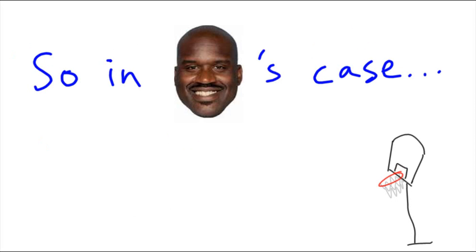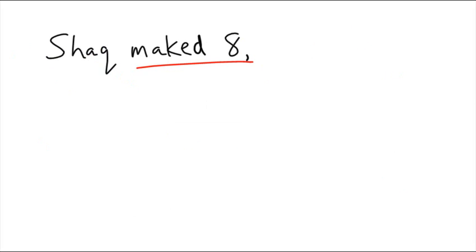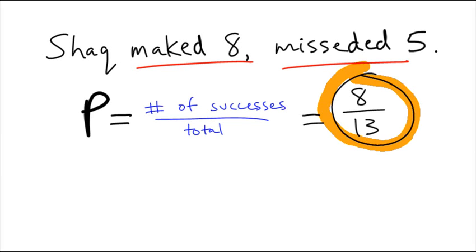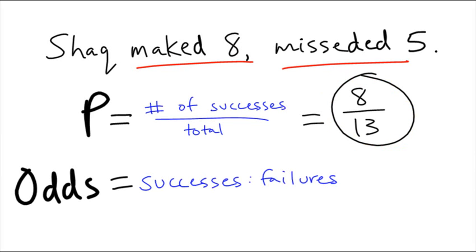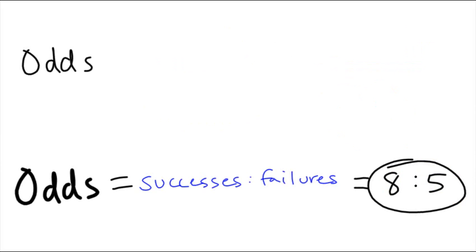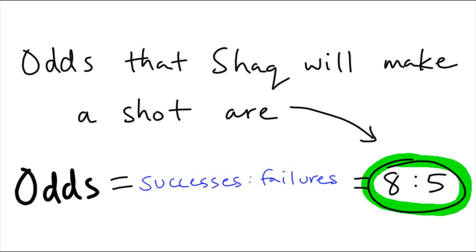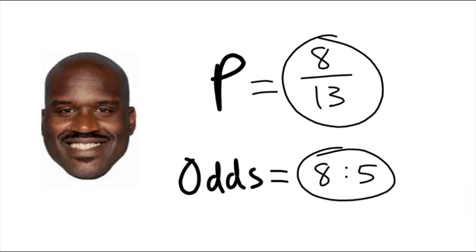In Shaq's case, when it comes to odds, he made 8 and he missed 5. His probability was 8 out of 13. And the odds — successes to failures — would be 8 to 5. So you could say the odds that Shaq will make a shot are 8 to 5. His probability was 8 out of 13, but his odds were 8 to 5.